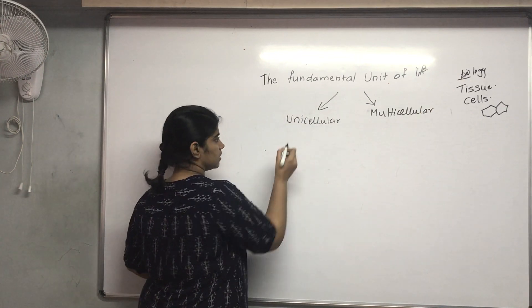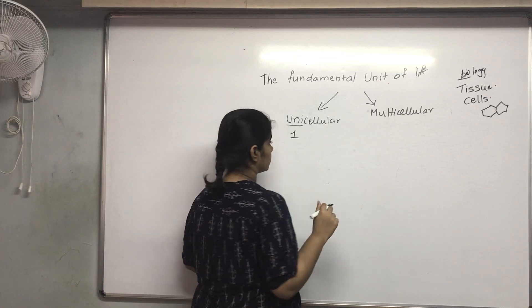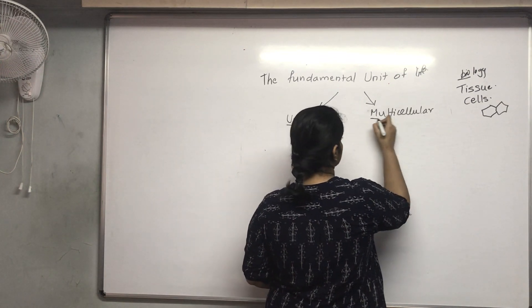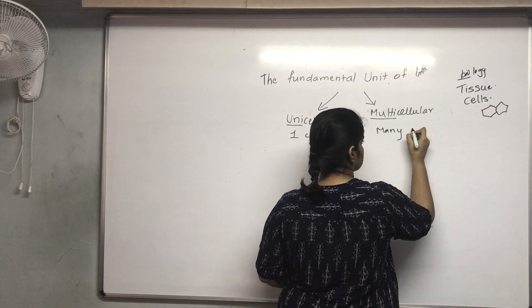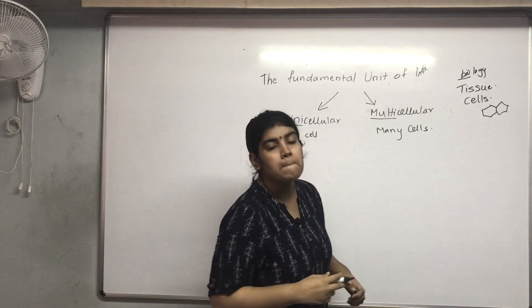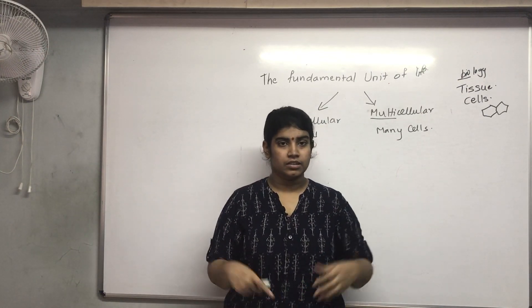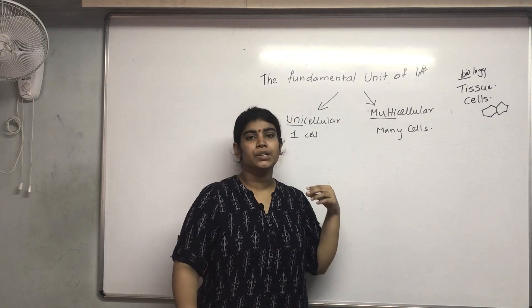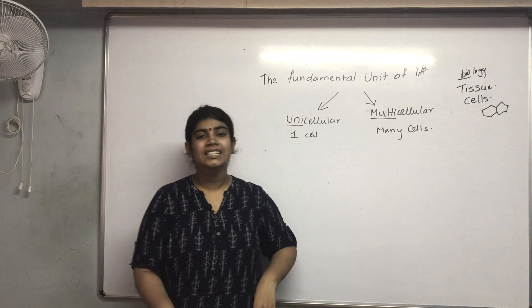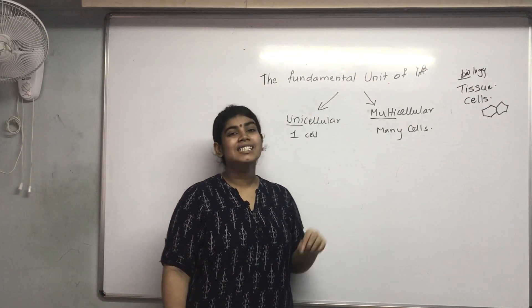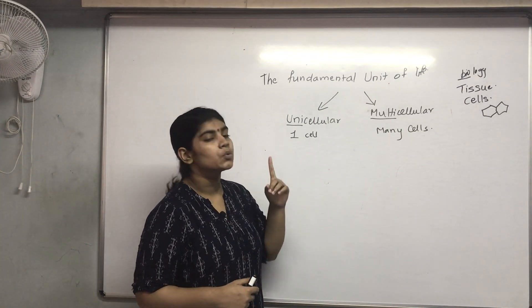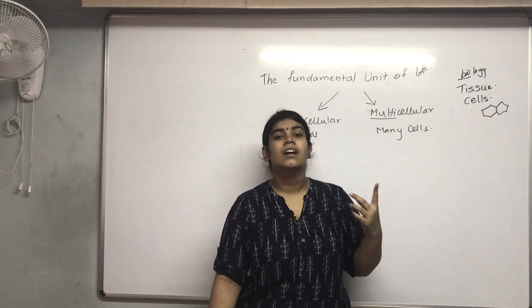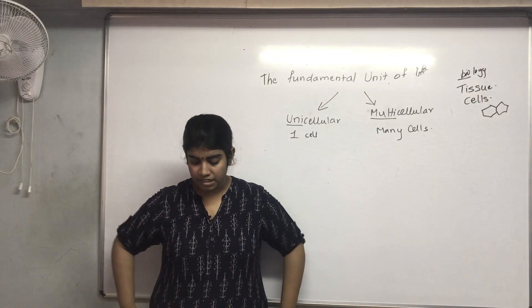Unicellular means 'uni' — one — so any organism with a single cell is a unicellular organism. Multi means many, so any organism with many cells is a multicellular organism. We humans have many cells and are multicellular. The classic example of a unicellular organism is the amoeba.